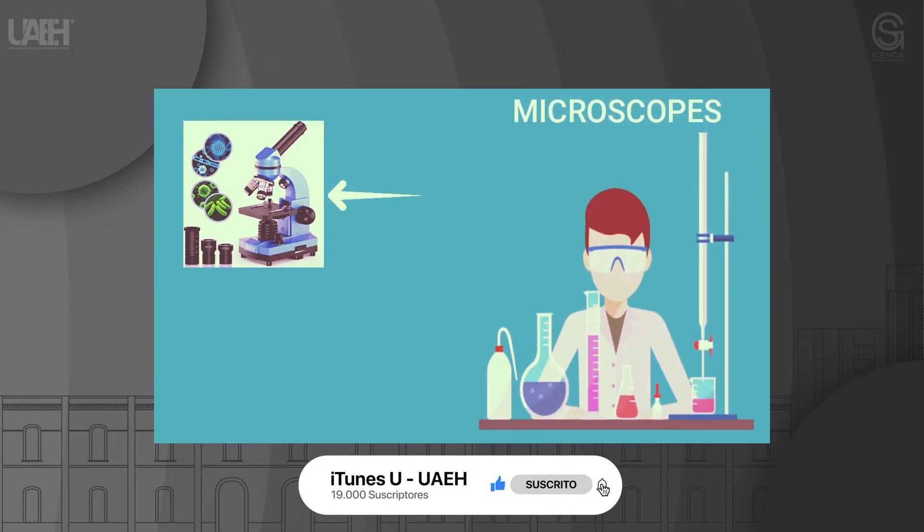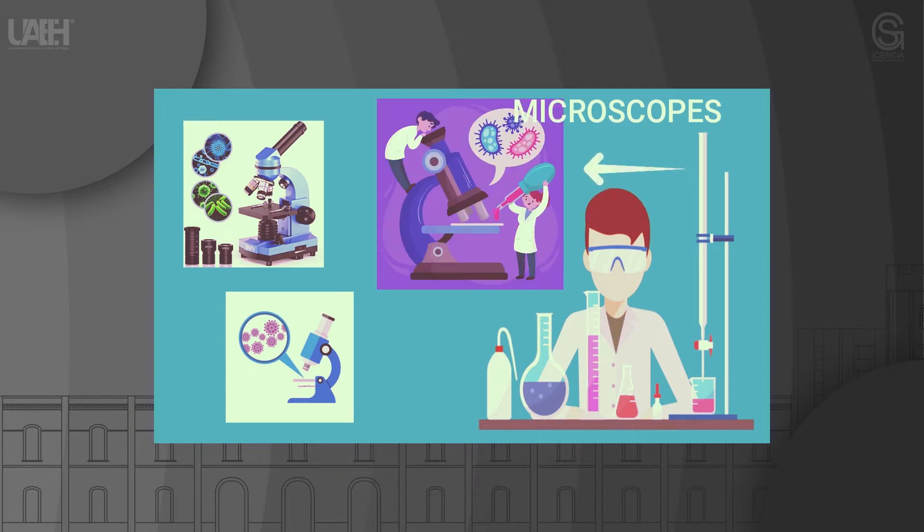What is a microscope? A microscope is a device that amplifies the image of small objects and makes it possible to observe the smallest details. There are three main operations that can be done with this tool: amplify the image, separate and see all the details.